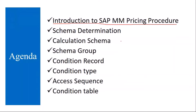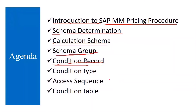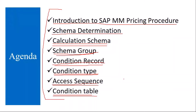You will understand what is pricing procedure, then schema determination — how the schema determination happens. Then we will see calculation schema, schema group, then condition records — how to maintain condition records in the system. Then condition types, what they are and how they are maintained, what is access sequence, the role of access sequence in the pricing procedure, and condition tables — how to maintain condition tables. These are the topics we will be covering in the pricing procedure.